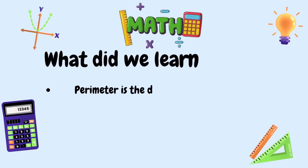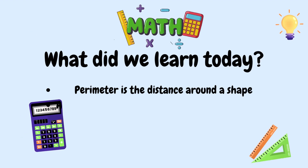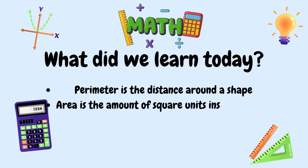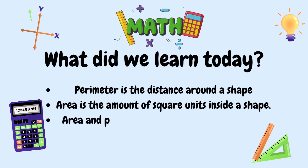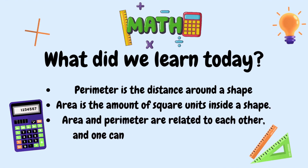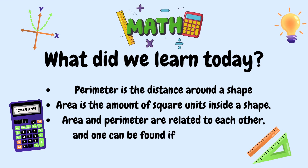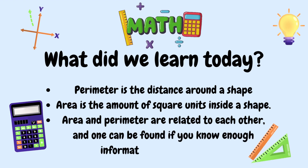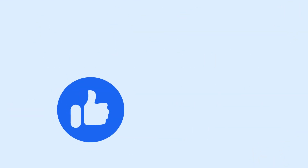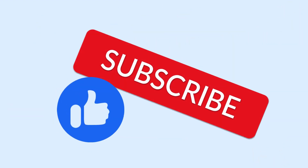Okay mathematicians, what did we learn today? We learned that perimeter is the distance around a shape. We also learned that area is the amount of square units inside a shape. Finally, we learned that area and perimeter are related to each other, and one can be found if you know enough information about the other. Don't forget to like, subscribe, and hit that notification bell. Goodbye, mathematicians!